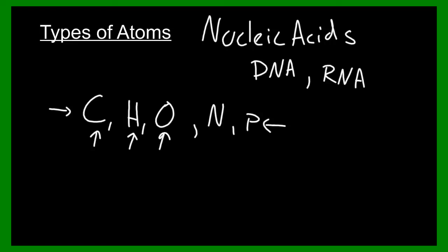You can remember the atoms that make up DNA and RNA with the acronym CHONP, kind of like chomp, you're eating something, but not the M. It's CHONP because there's nitrogen and phosphorus as well. These are the types of atoms that make up nucleic acids, and there's two different basic kinds of nucleic acids, DNA and RNA.